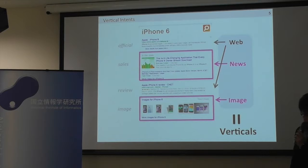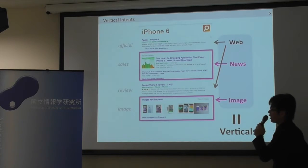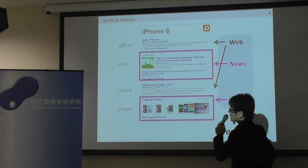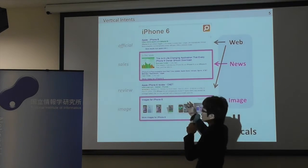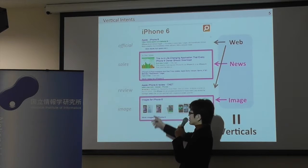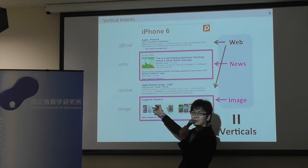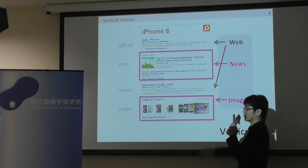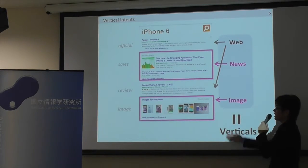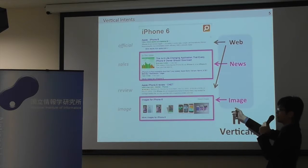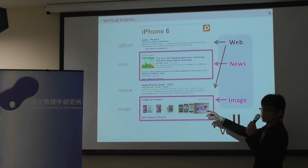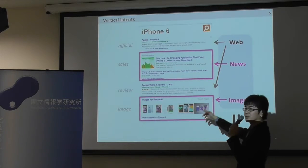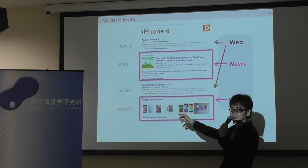The important point here is, for example, if the user wants to find images of iPhone 6, it is better to return image search results rather than usual web search results.